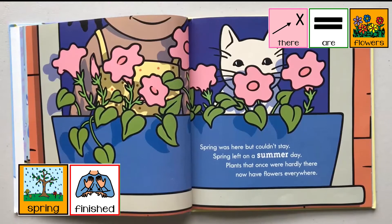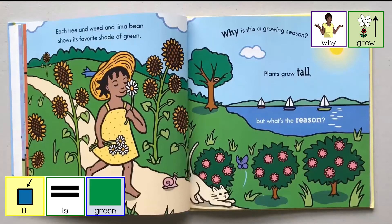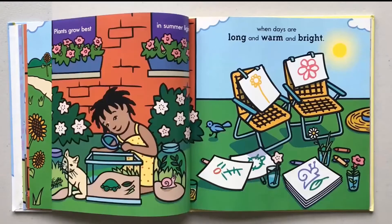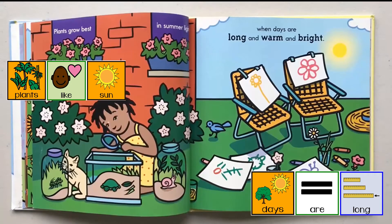Plants that once were hardly there, now have flowers everywhere. Each tree and weed and lima bean shows its favorite shade of green. Why is this a growing season? Plants grow tall. But what's the reason? Plants grow best in summer light, when days are long and warm and bright.